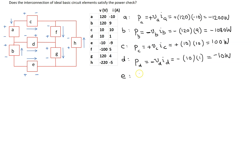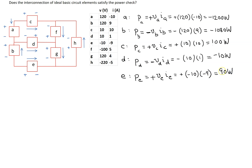Looking at element E, power is voltage times current, P_E = V_E × I_E. For element E, the reference current is entering the terminal marked plus, so we use the power calculation with a positive sign. Substituting the values: minus 10 times minus 9 equals 90 watts. This is a positive answer, so element E is absorbing power.